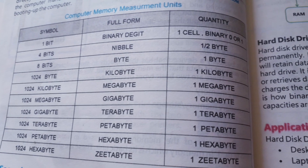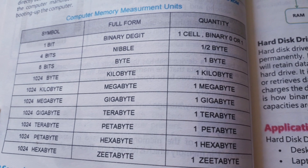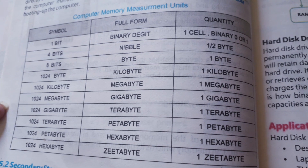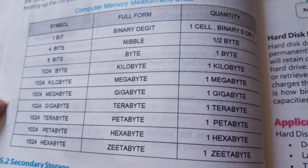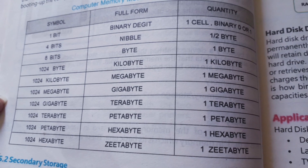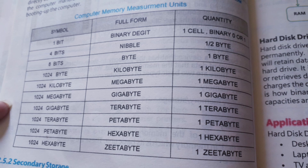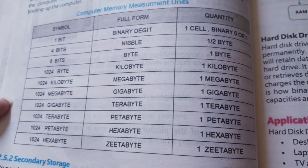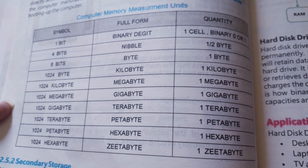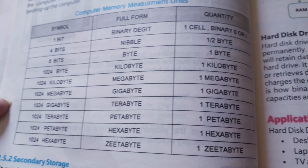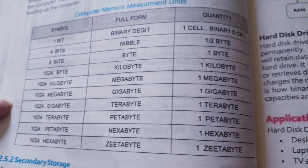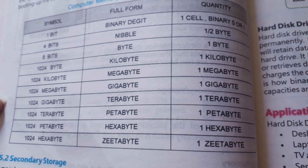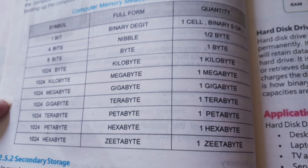I made a video before where I told you about 1 bit, and the concept I gave you was byte. So now, 1 bit is 0 and 1 — if there is one cell, we say that it is 1 bit, okay? It can be 1 or 0. Then, if there are 4 bits, we say that it is a nibble.